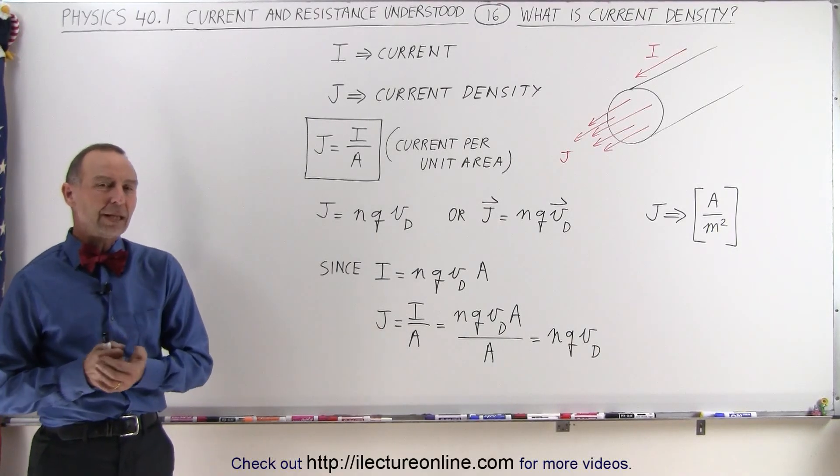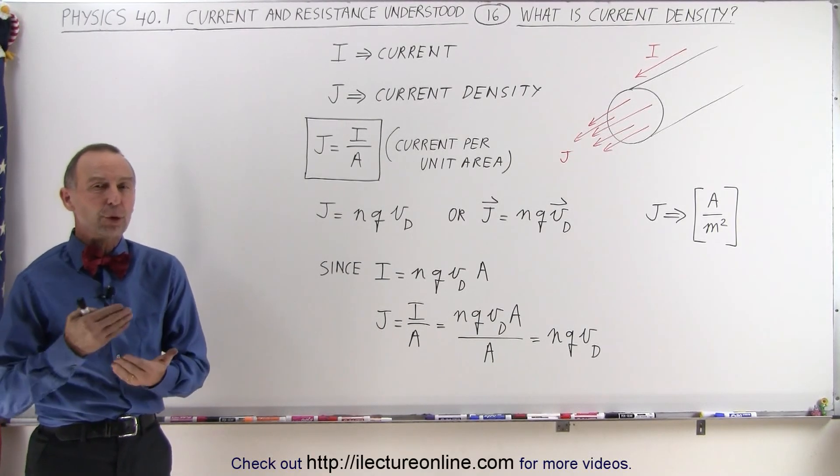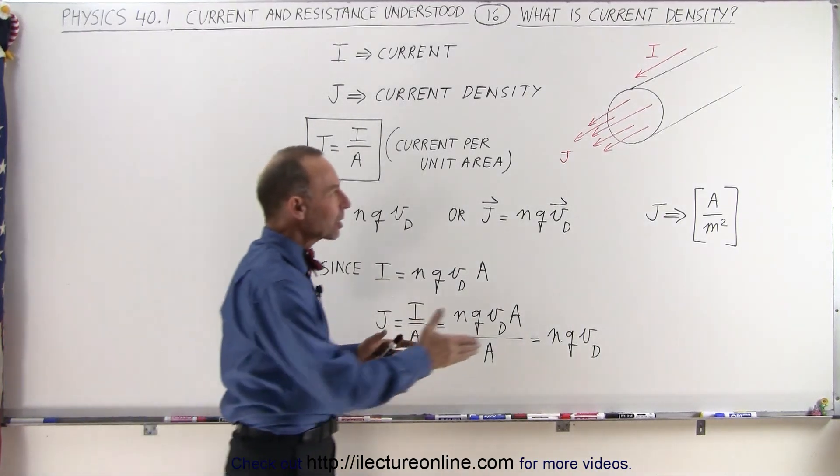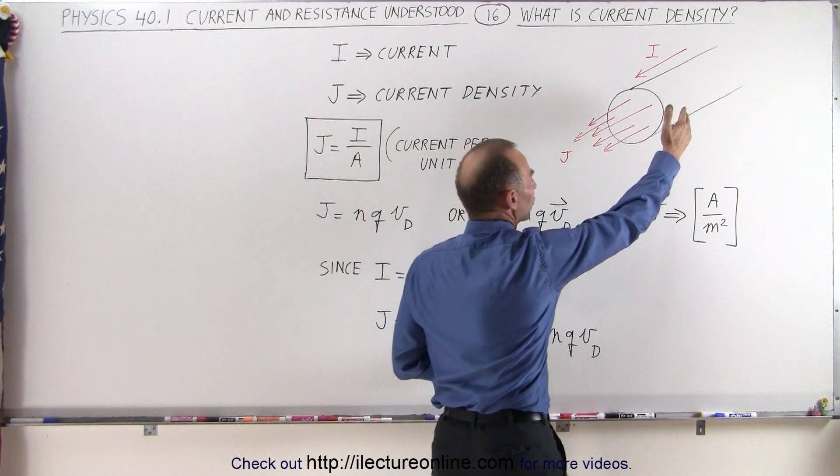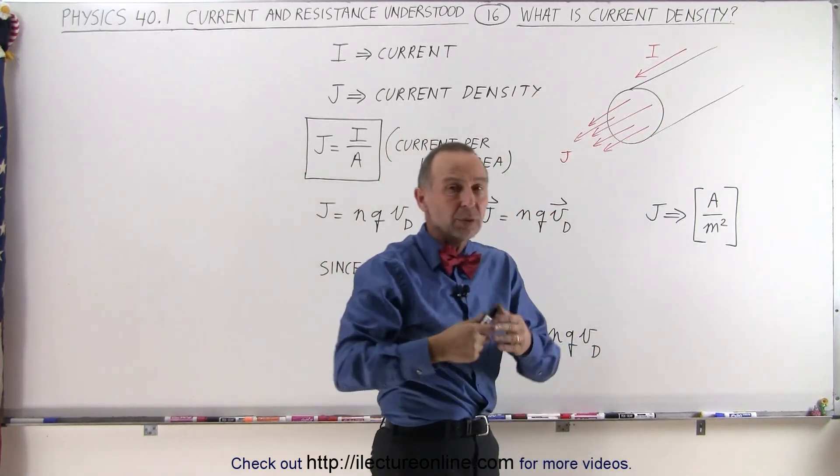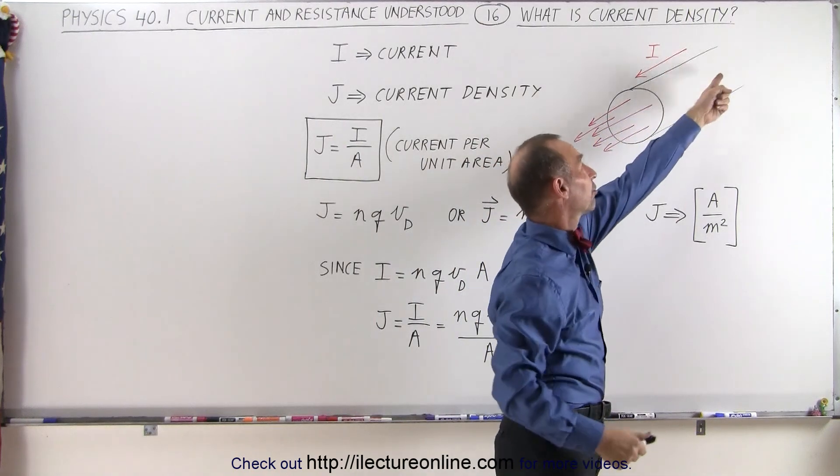Welcome to ElectronLine. Now let's explore the concept of current density. What does that mean? Well, if we take a conductor, for example, that has a current, meaning movement of charges, we usually indicate with an arrow that the current direction is from there to here.